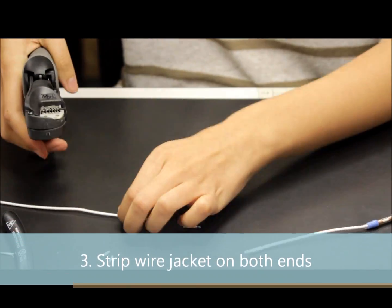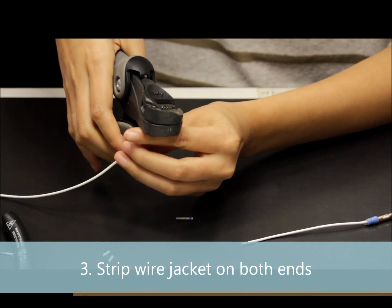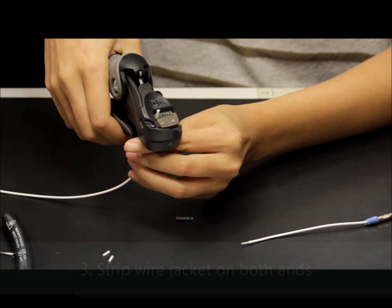Strip the wire jacket on both ends. The strip length is specified on the assembly instruction sheet.